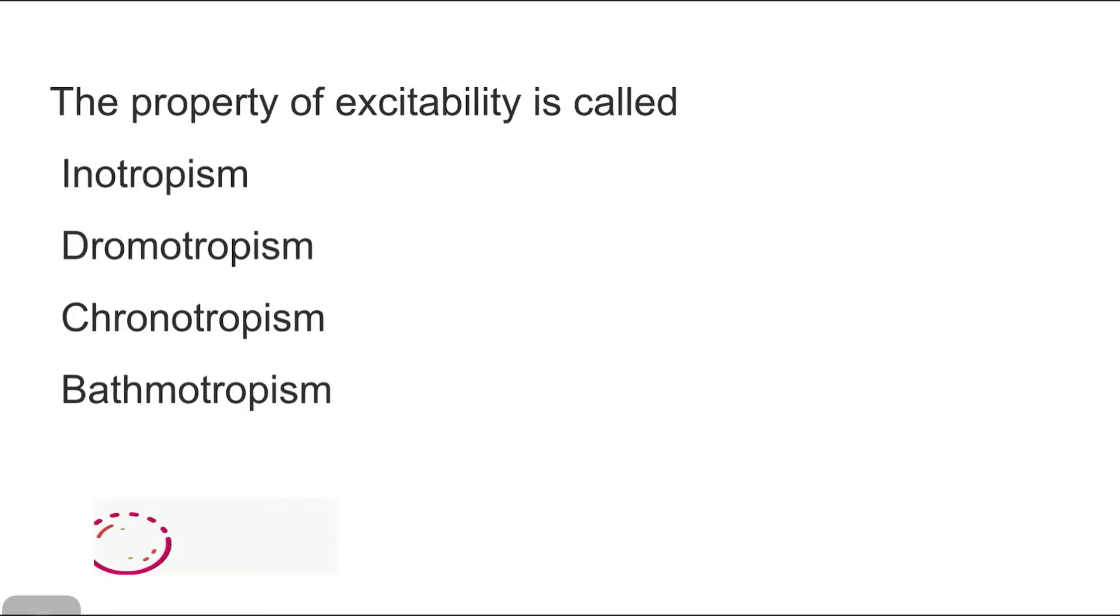Next, the property of excitability is called. So we are given four options, whether it is inotropism or dromotropism or chronotropism or bathmotropism. First, I will explain what are they and then I will try to simplify how you could remember things.